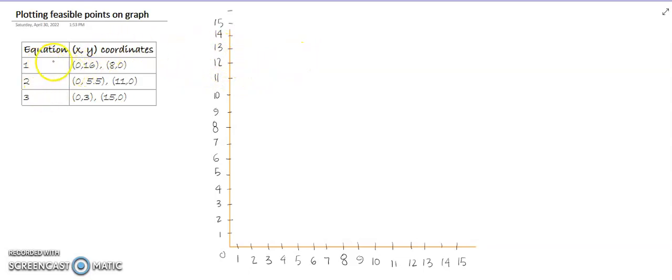I have made a table here to understand it and to create the graph. Equation number 1 has two coordinates from each equation: 0,16 and 8,0. Equation number 2 has 0,5.5 and 11,0.